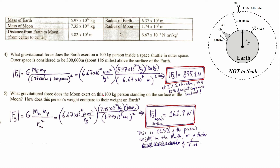If we take that same 100 kilogram person and place them on the Moon, how heavy are they? Newton's universal law of gravitation works for the Earth, the Moon, or any two objects with mass. Standing on the Moon, we use the mass of the Moon, the mass of the person, divided by the radius of the Moon squared. Plugging those values in, a 100 kilogram person would feel a weight of 161.9 Newtons on the Moon's surface.